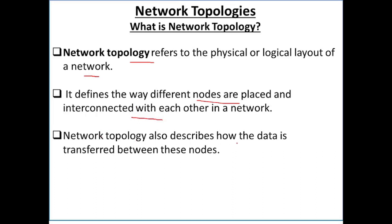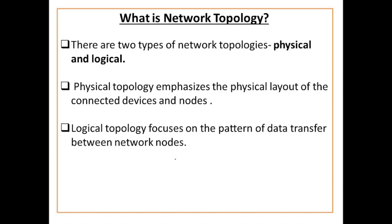Network topology also describes how the data is transferred between these nodes. Network topology ye bhi define karta hai. Physical layout means uska architecture kya hai — devices ko kaisi ek dusre se connect kiya jayega, kis medium se connect kiya jayega. Logical topology focuses on the pattern of data transfer between the network nodes — logical topology focus karta hai ki kaisi data ko transfer kiya jayega, ek node se dusre node tak.